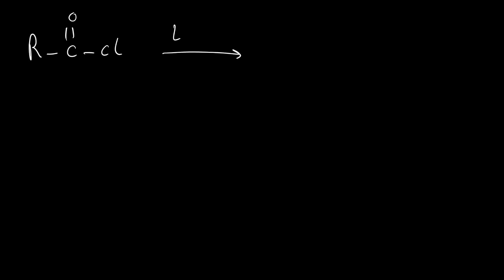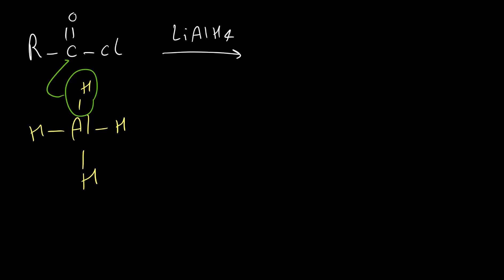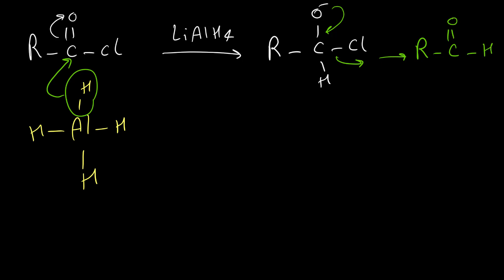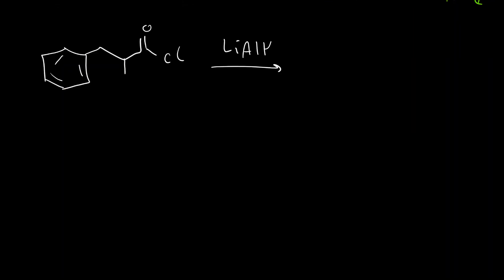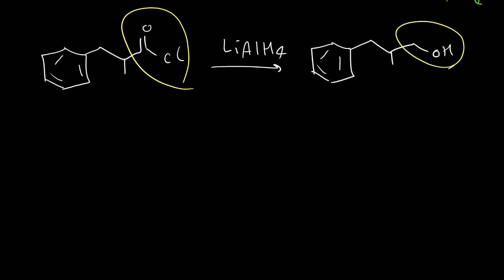After carboxylic acids, let's discuss acid chlorides. When acid chloride reacts with LiAlH4, one hydride transfers to the acid chloride, opening the double bond to form an intermediate. The negative oxygen returns and kicks out the chloride, generating an aldehyde intermediate. However, we cannot isolate this aldehyde because it immediately reacts with more LiAlH4 and converts to a primary alcohol. So regardless of starting from acid chloride or carboxylic acid, we get the same primary alcohol product.